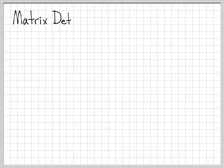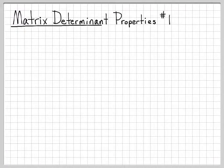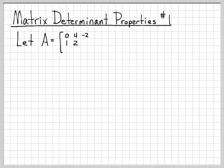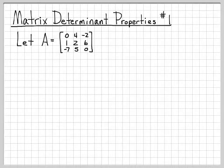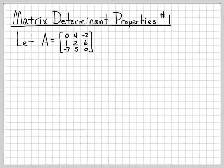In the last video, we computed the determinant of a matrix using the definition of the determinant. In this video example, we're going to take a look at a very useful property of matrix determinants. We're going to work with the exact same matrix we worked with in the last video, the 3 by 3 matrix A.